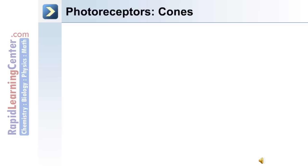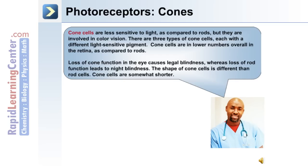The other type of photoreceptors in the retina are cones. Cones are less sensitive to light compared to rods but are involved in color vision. There are three types of cone cells, each with a different light-sensitive pigment. Cone cells are lower in number compared to rods. Loss of cone function causes legal blindness, whereas loss of rod function leads to night blindness. Cone cells are somewhat shorter in shape than rod cells.